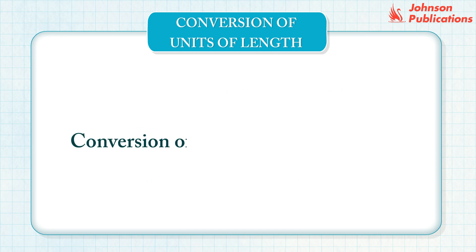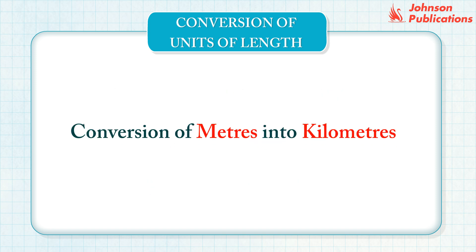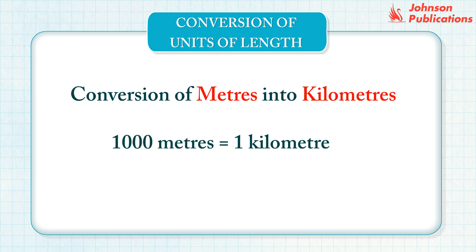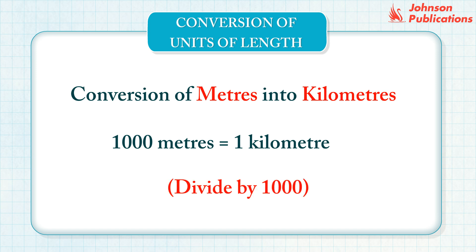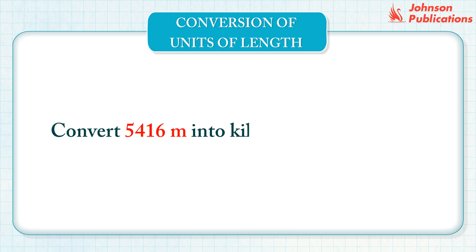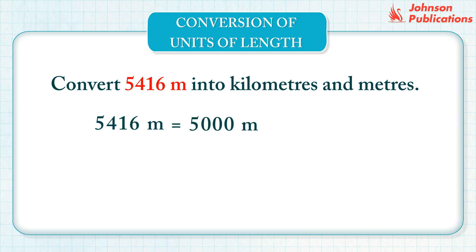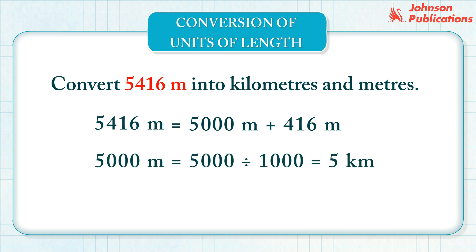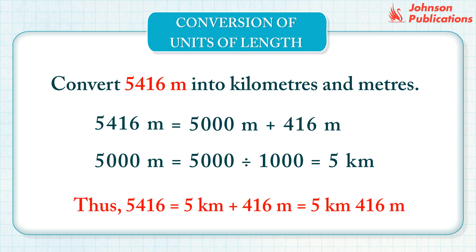Let us learn the conversion of meters into kilometers. We know that 1,000 meters equals 1 kilometer. To convert meters into kilometers, divide the meters by 1,000. Let us convert this measurement into kilometers and meters. We can write this length as 5,000 plus 416. Dividing by 1,000, 5,000 meters equals 5 kilometers. Thus, the length equals 5 kilometers, 416 meters.